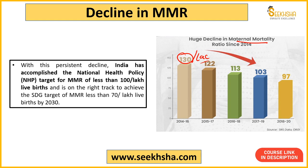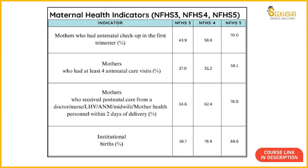The National Health Policy 2017 had set a target to bring MMR below 100 per lakh live births. Since it is now 97, that target has been achieved. The next important target at the international level is the Sustainable Development Goal target, which says MMR should come below 70 per lakh live births by 2030. So the government's initiatives will definitely help in achieving the SDG target as well. Remember: current MMR is 97, NHP 2017 target of 100 is achieved, and SDG target is 70 per lakh live births.